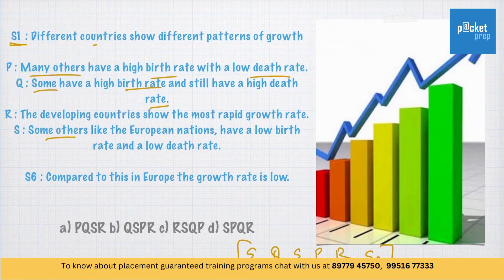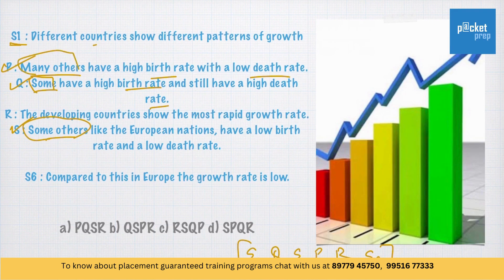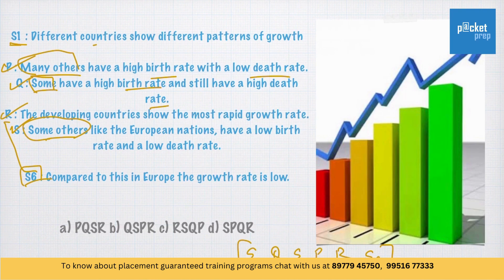After statement 1, statement Q comes next — it has 'some' at the beginning. Then statement S comes next, where it has 'some others.' Then comes P with 'many others have a high birth rate with a low death rate.' Finally R: 'The developing countries show the most rapid growth rate.' Statement 6 should come after R — 'Compared to this in Europe, the growth rate is low.' Compared to what? The developing countries. So Option B is the right answer.